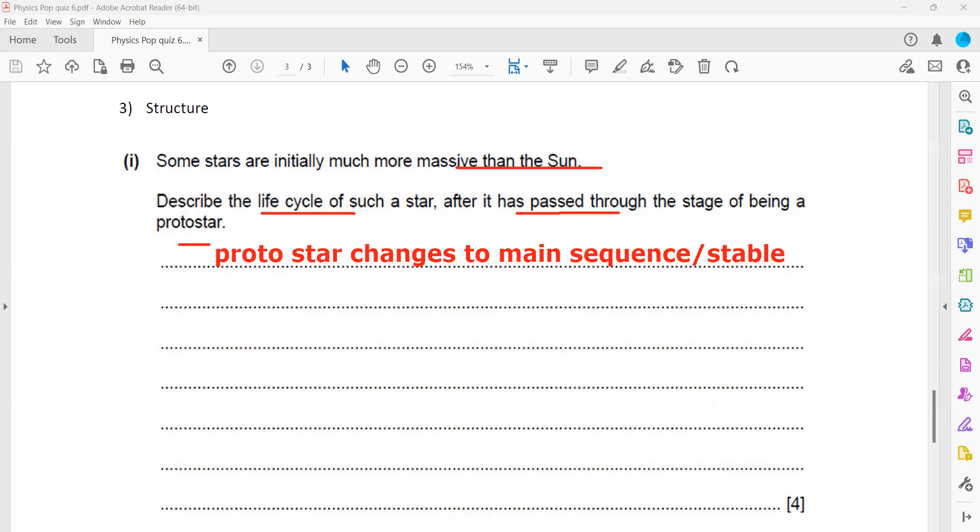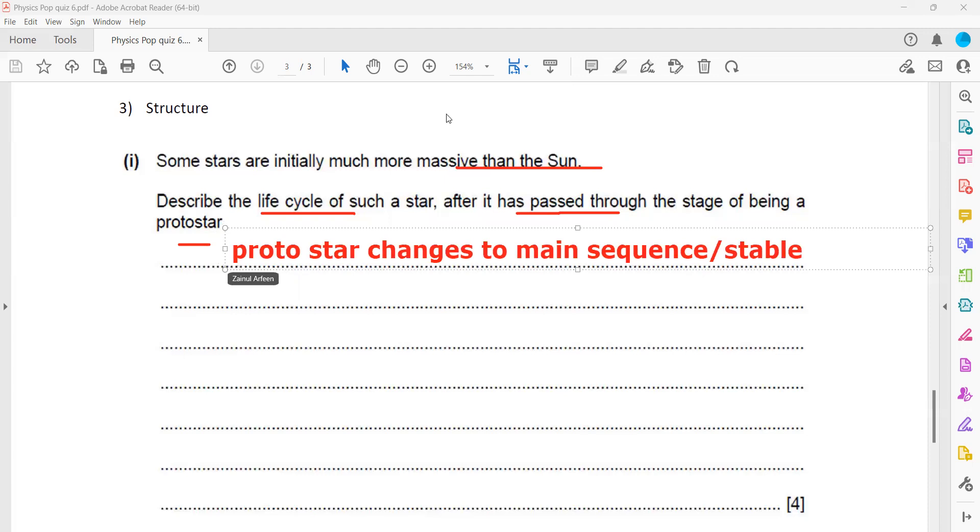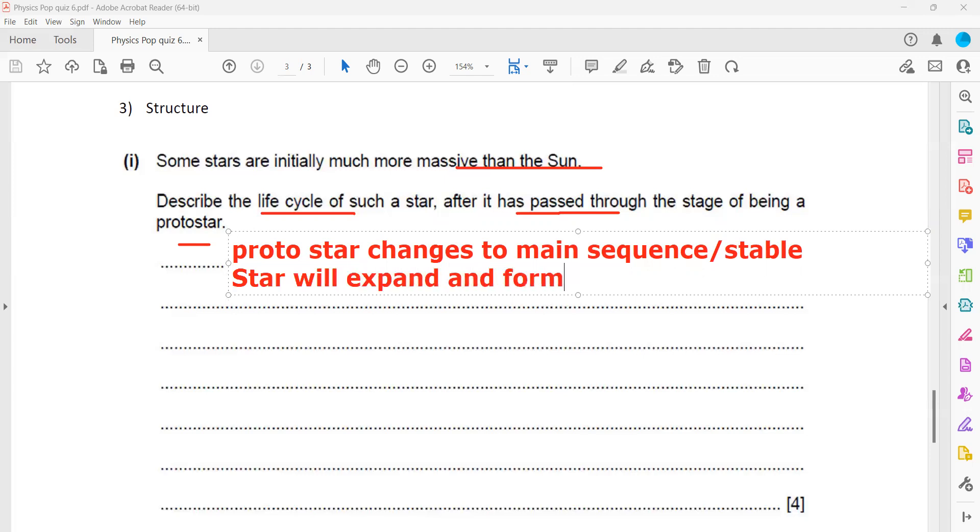Then what will happen? When the hydrogen fusion eases, the star initially will reduce in size as gravity is stronger, and that reduction in size increases the temperature which starts the helium fusion. And when it starts helium fusion, the star will expand and will form a super giant. You can say red super giant, you can say super giant - both are correct.